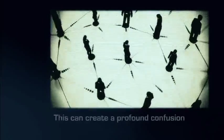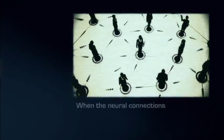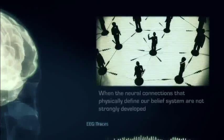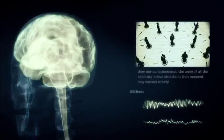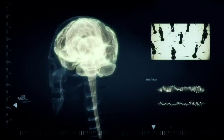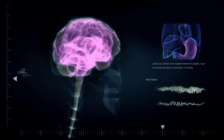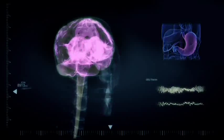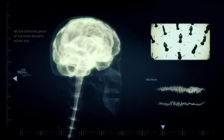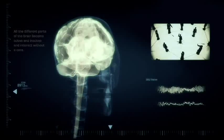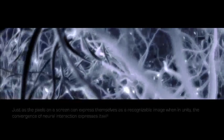This can create a profound confusion when mirroring others. When the neural connections that physically define our belief system are not strongly developed or active, then our consciousness, the unity of all the separate active circuits at that moment, may consist mainly of activity related to our mirror neurons. Just as when we experience hunger, our consciousness consists mostly of other neural interactions for consuming food. This is not the result of some core self giving commands to different cerebral areas. All the different parts of the brain become active and inactive and interact without a core. Just as the pixels on a screen can express themselves as a recognizable image when in unity, the convergence of neural interaction expresses itself as consciousness.